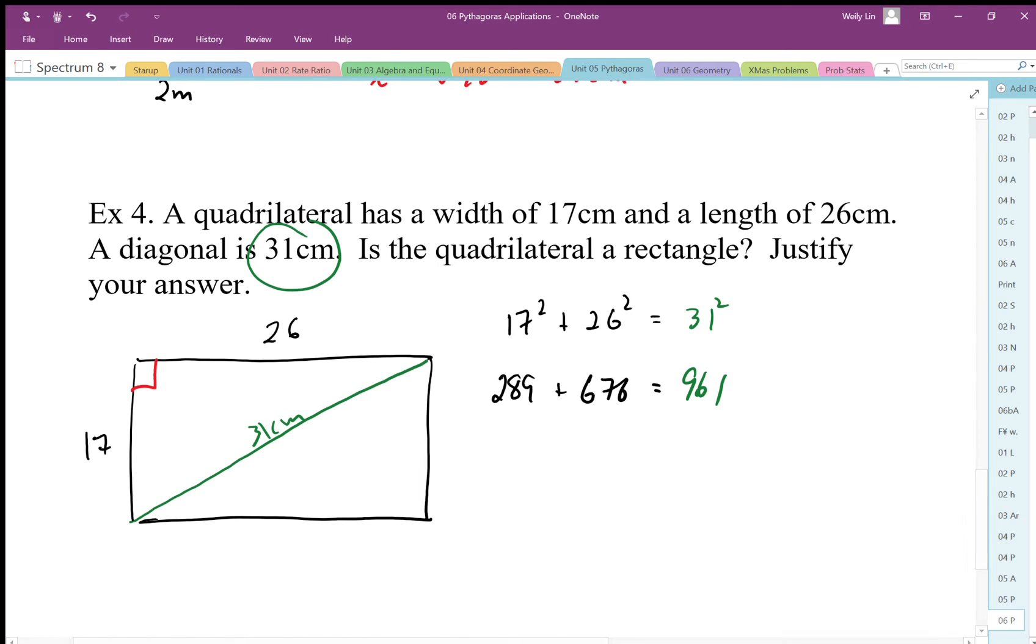289 plus 676 equals 965. So I end up with 965 and that is definitely not equal to 961. Okay, so these are not equal to each other. So what does that prove then? That means then that this is not 90 degrees. So the statement I'm gonna make, this is my argument then.